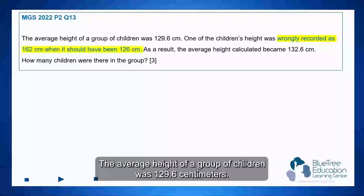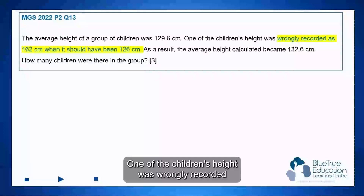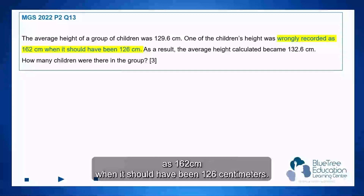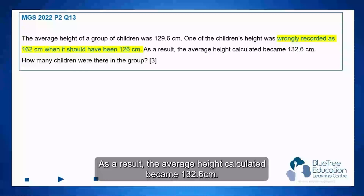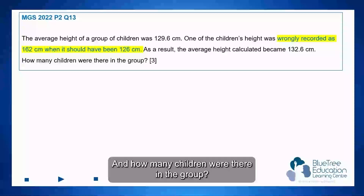The average height of a group of children was 129.6 cm. One of the children's heights was only recorded as 162 cm when it should have been 126 cm. As a result, the average height calculated became 132.6 cm. How many children were there in the group?